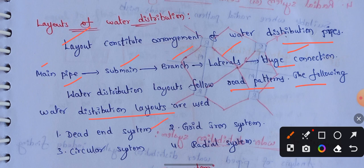The first system is the dead-end system, also called the tree system. The second one is the grid-iron system. The third one is the circular system. The fourth one is the radial system.